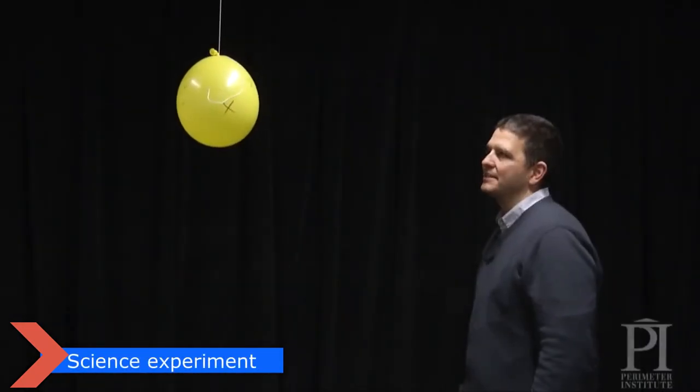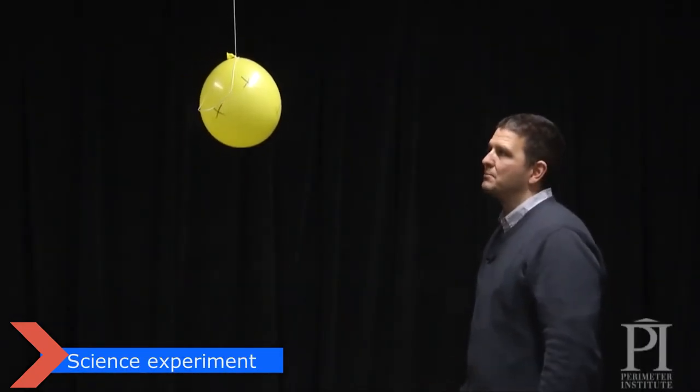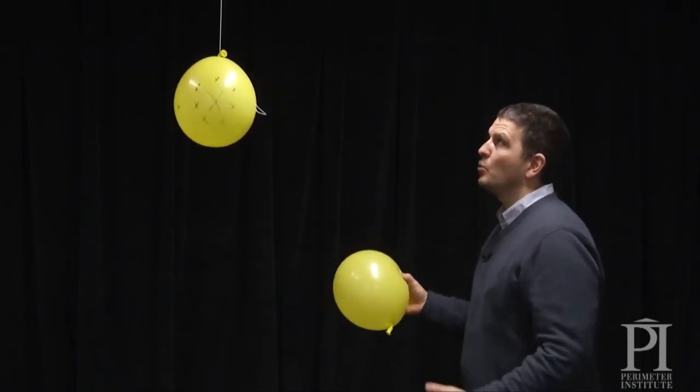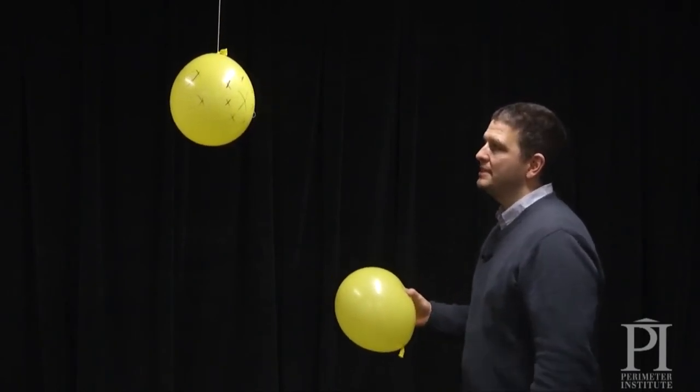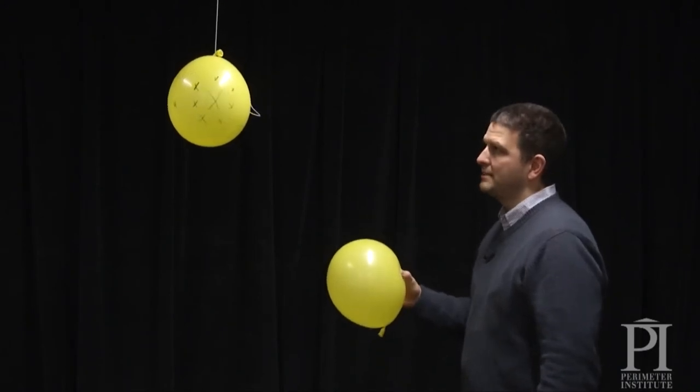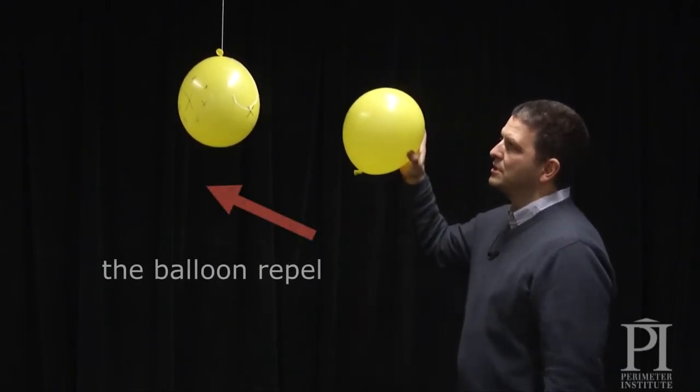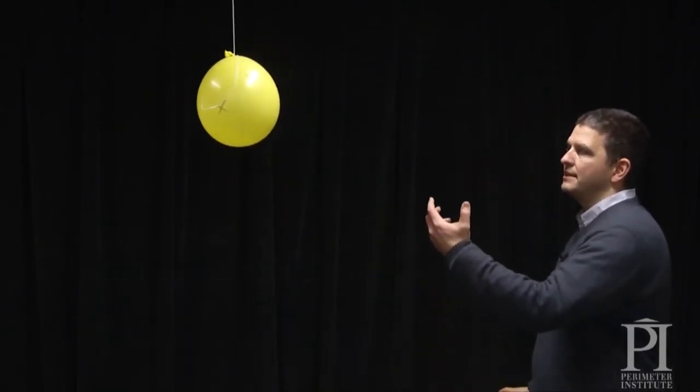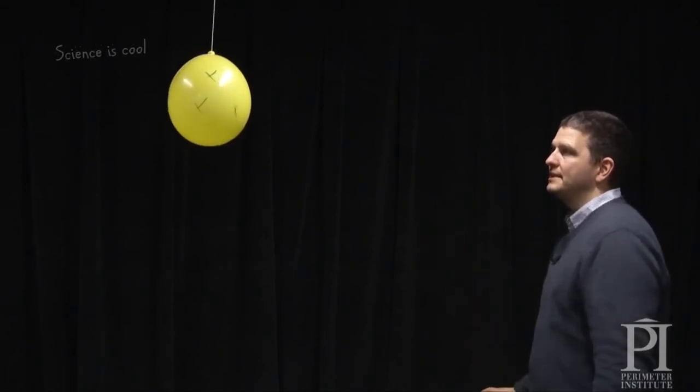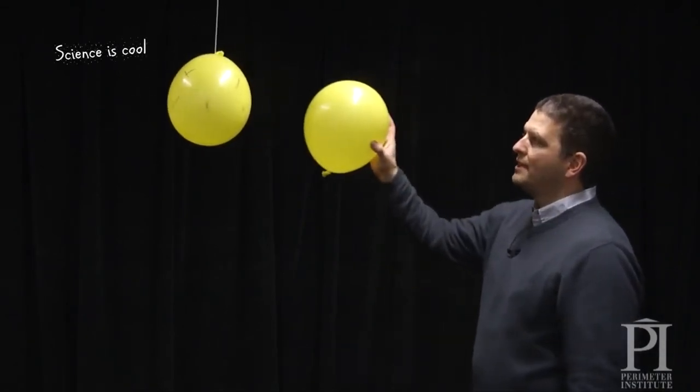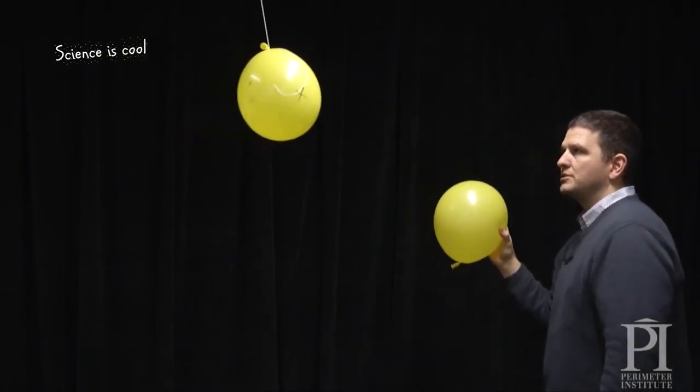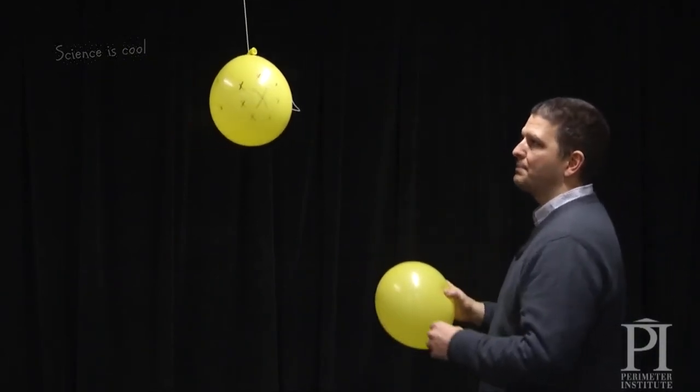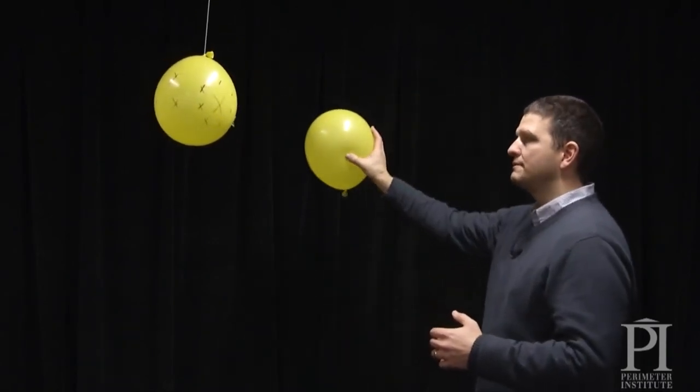The basis of Rutherford scattering is electrostatic repulsion. We're going to model electrostatic repulsion with two balloons that have charge on them. One is hanging from the ceiling and the other is going to be held in my hand. As I approach, you're going to see a deflection. You're going to see that the balloon that's hanging from the ceiling moves away as the incoming charge approaches. And this models in a backwards way what happened with Rutherford. In Rutherford it was the incoming particle that deflected.